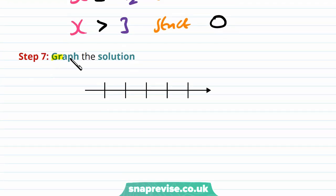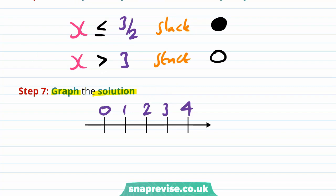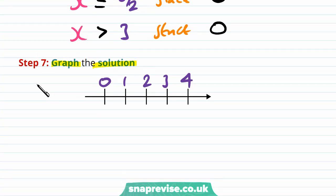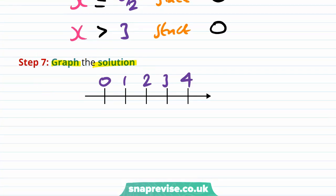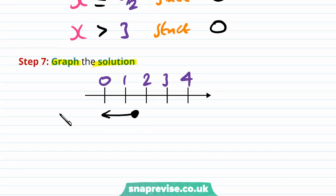Step 7: graph the solution. On a number line with 0, 1, 2, 3, and 4, we draw a filled-in circle between 1 and 2 (at 3/2) going off to the left for the first inequality, and a plain circle at 3 going off to the right for the second. This represents all values of x satisfying both inequalities — x ≤ 3/2 and x > 3.